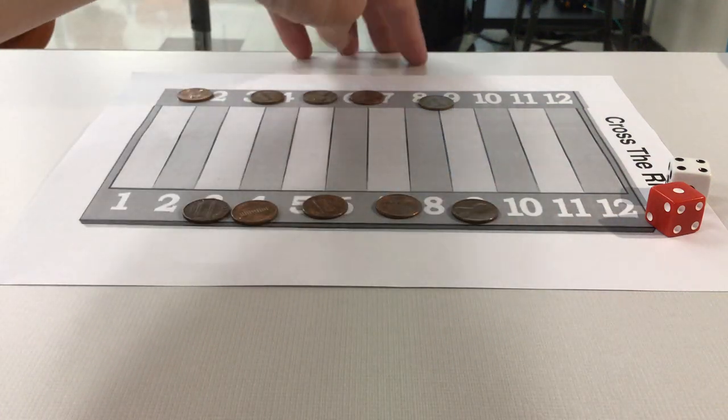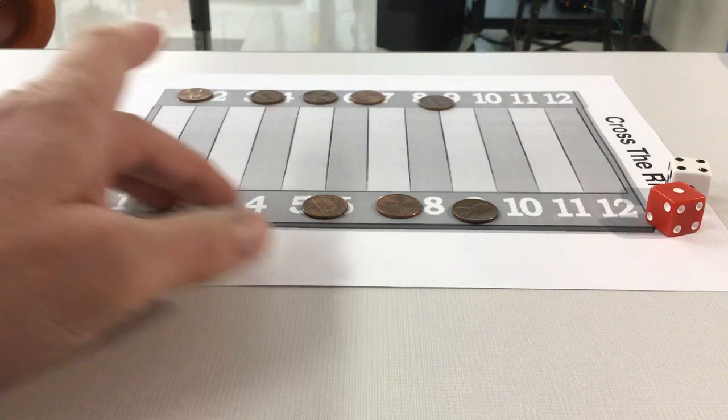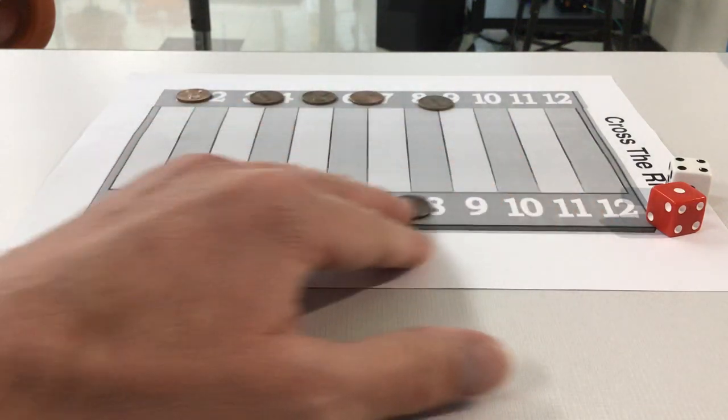One person sits on this side, another person sits on the other side, and each of you get five pennies, and you want to put them anywhere you want on this number line here, one through twelve.